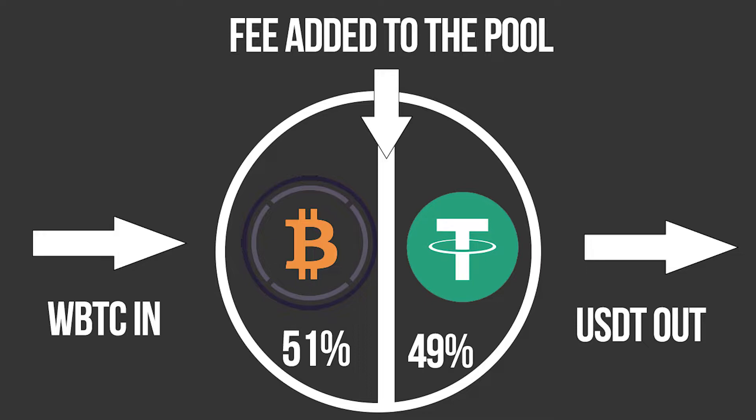Now this pool of tokens — when people trade into it, they are paying a fee. This fee is paid to the people that are providing this liquidity. Providing liquidity just means that you're adding your tokens — half of the stablecoin and half of token X — into the pool, and for providing the service you are making the fees.